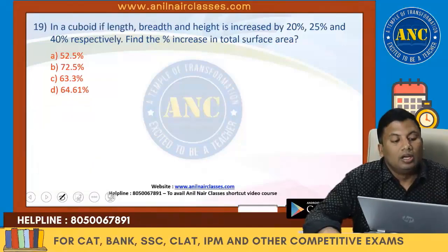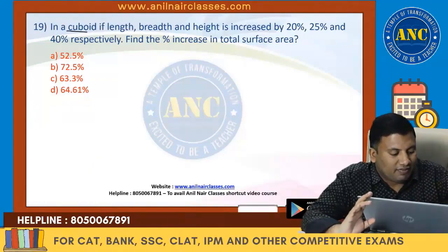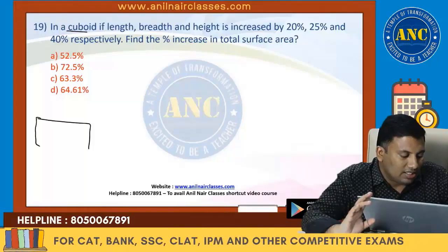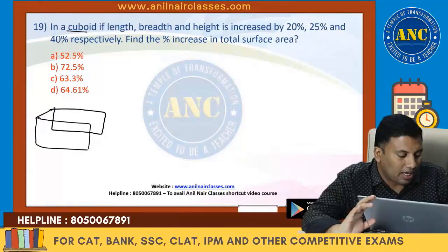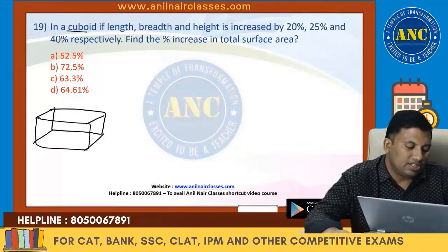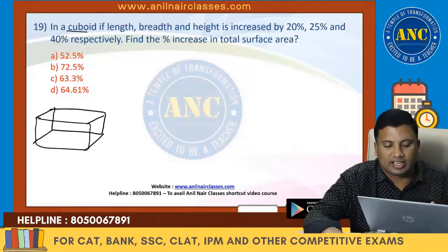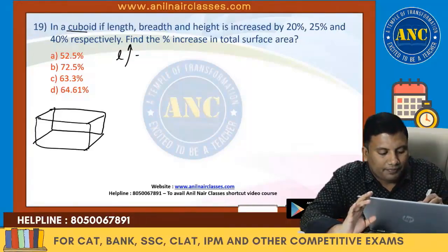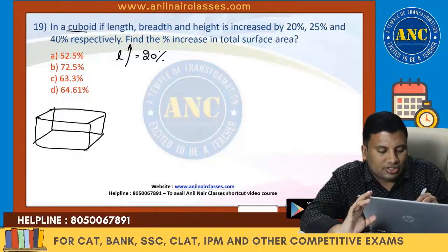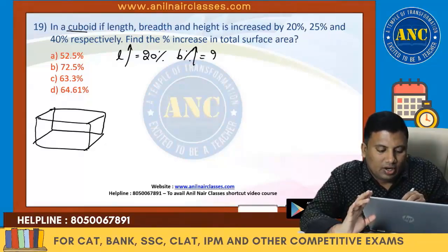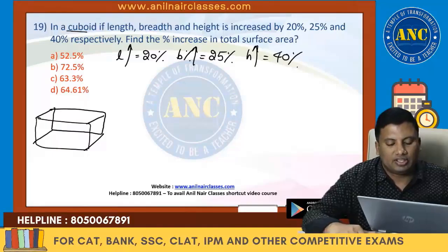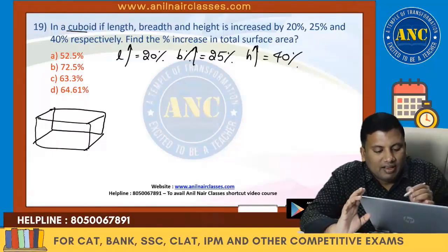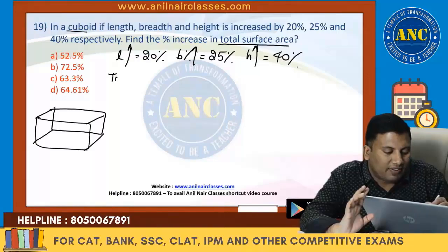Now see here. In a cuboid, there is a figure. A cuboid is a combination of two rectangles — one rectangle overlapping another rectangle. There is length, there is breadth, and there is height. Length is increased by 20%, breadth is increased by 25%, height is increased by 40%. Find the percentage increase in total surface area.